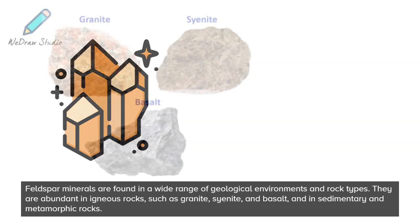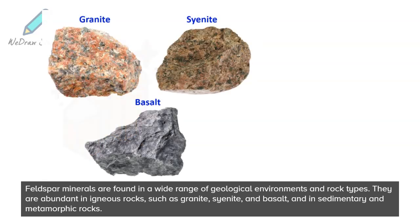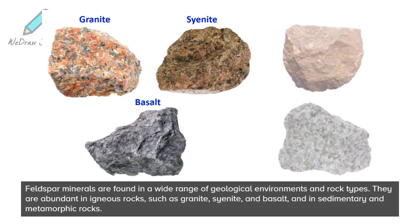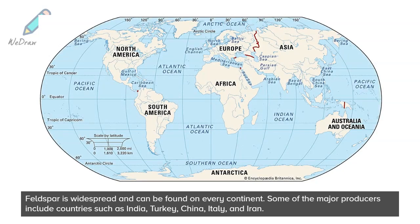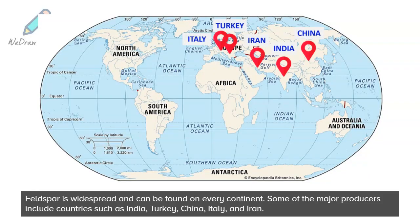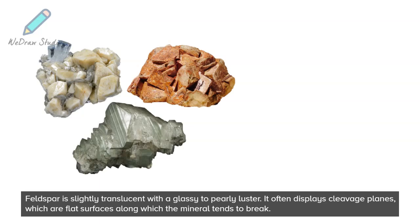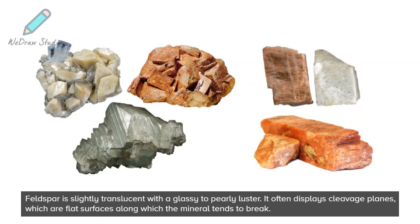Feldspar is found in igneous rocks such as granite, syenite, and basalt, and also in sedimentary and metamorphic rocks. It is widespread and can be found on every continent. Some of the major producers include countries such as India, Turkey, China, Italy, and Iran. Feldspar is slightly translucent with a glassy to pearly luster and often displays cleavage planes, which are flat surfaces along which the mineral tends to break.